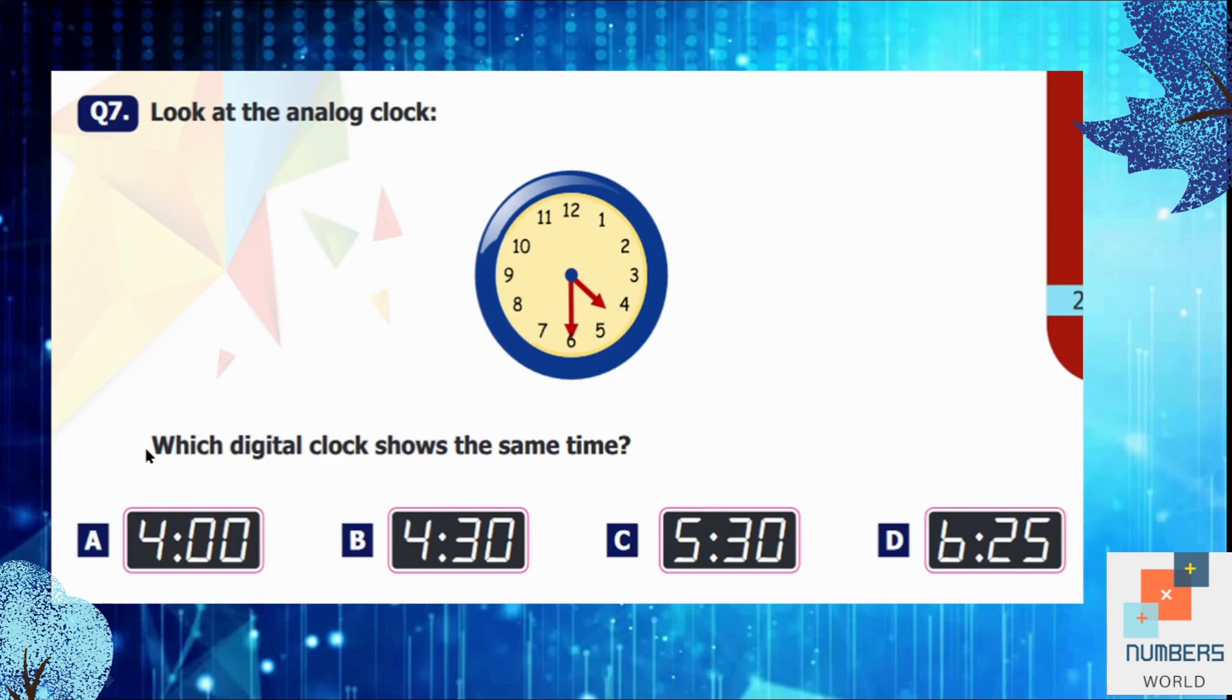Question number 7: Look at the analog clock. Which digital clock shows the same time? So you can see the smaller arm, the hour arm, is in between 4 and 5. So our hour is 4, and the longer arm is on 6. So it's half past 4. Half past means 30 minutes. So the time is option B, 4:30.